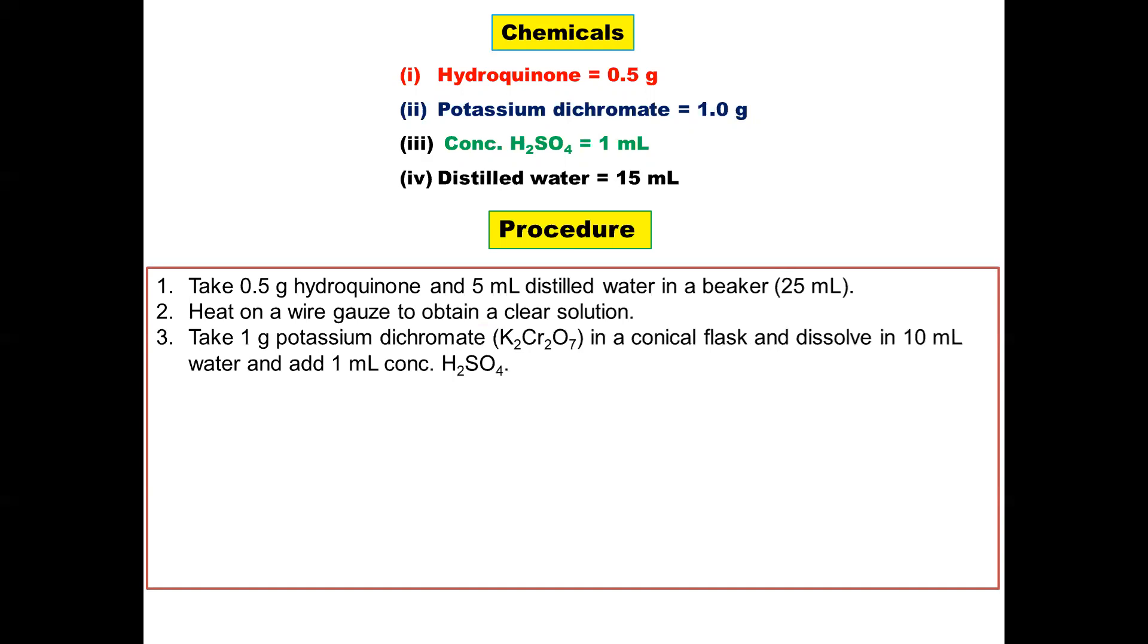Take 1g potassium dichromate, that is K2Cr2O7, in a conical flask and dissolve in 10ml water and add 1ml concentrated H2SO4. Shake and cool the conical flask in ice water.